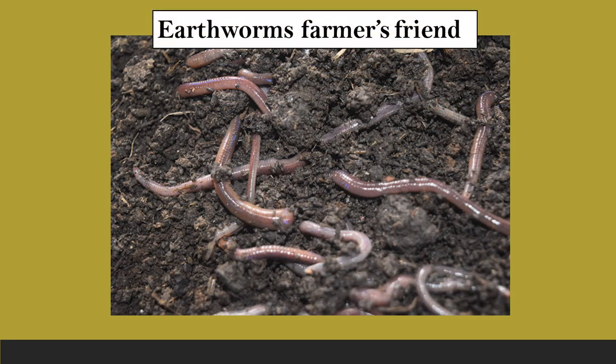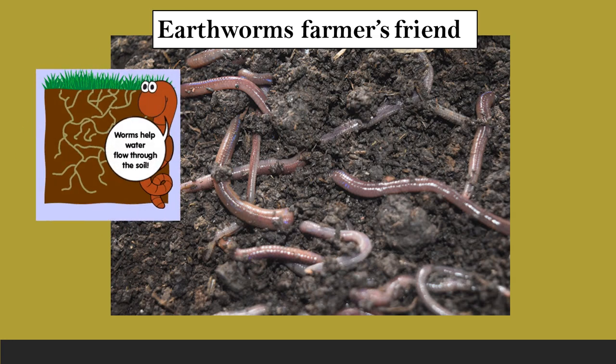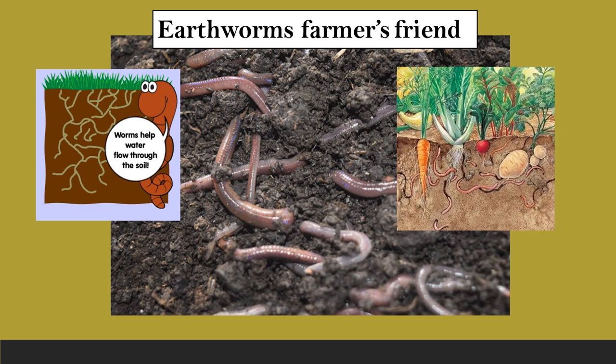Now let's talk about the farmer's friends. These are the earthworms. Earthworms are called farmer's friends. They are found under the soil. They make the soil loose and fertile. Earthworms help water flow through the soil. They are very useful to farmers.